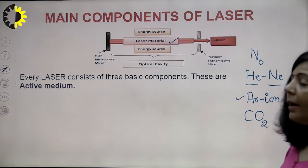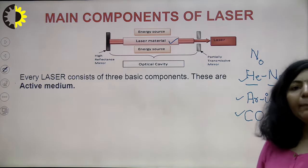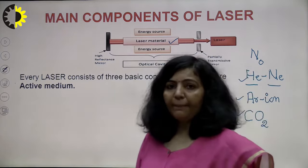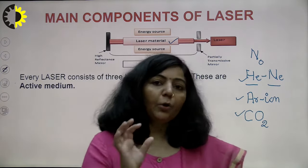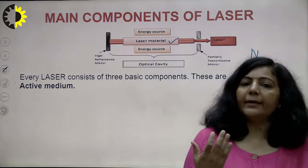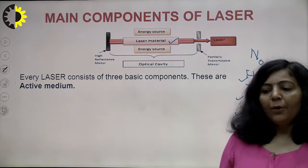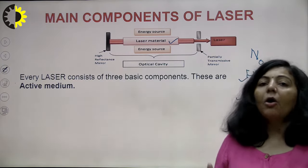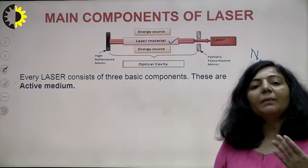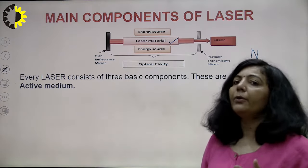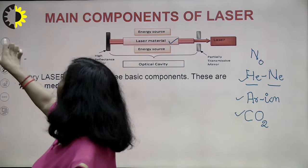An active medium is a collection of atoms, ions, or molecules in which you amplify light. This active medium can be in solid form, liquid form, or gaseous form. Depending upon the active medium, we classify lasers as solid state lasers, gas lasers, or liquid lasers. This is the first and very essential component of a laser system without which a laser cannot work.